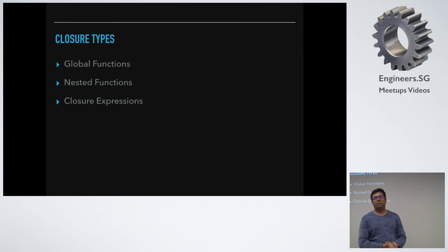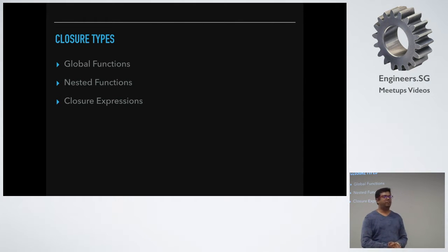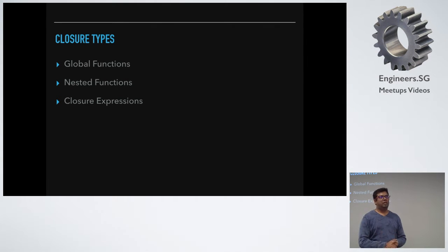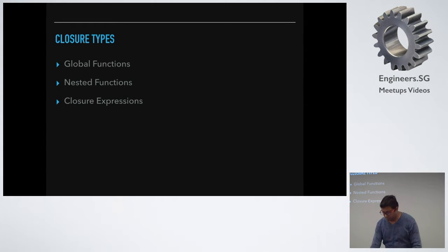If you have any global function, that is a kind of closure — a special case of closure which basically does not capture a variable. But as a nested function, I'll show you how it captures the variable scope, and there are closure expressions as well.